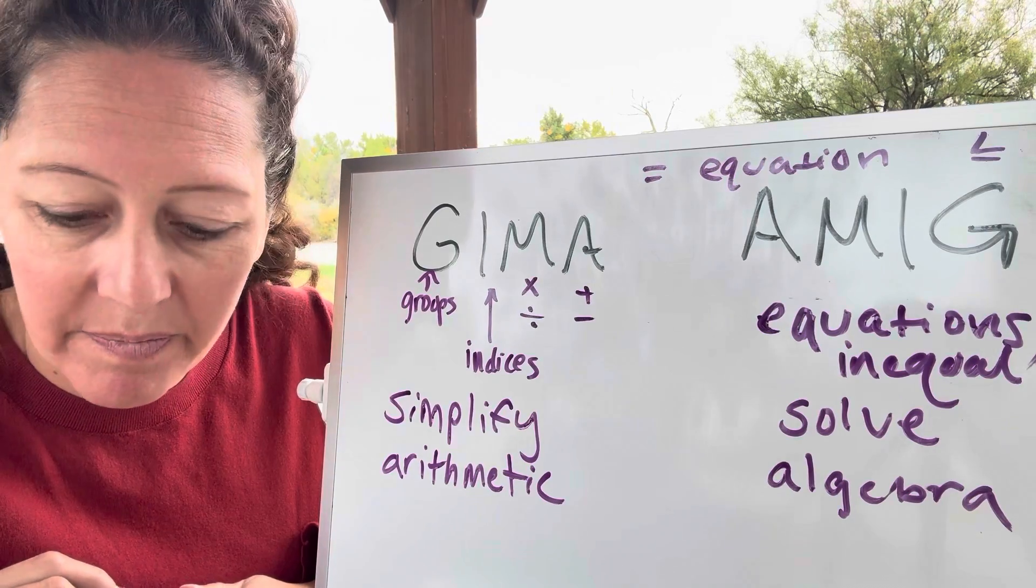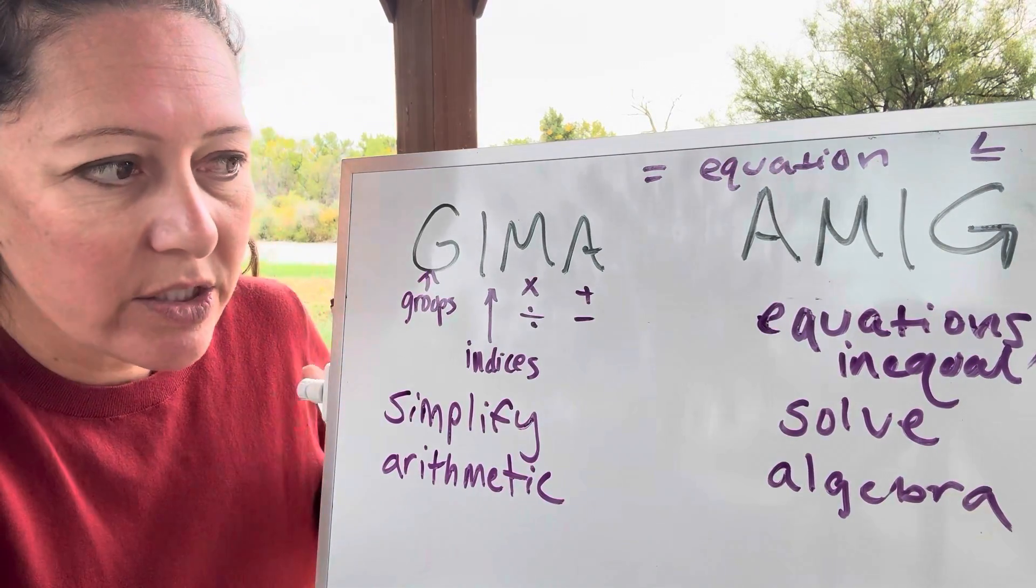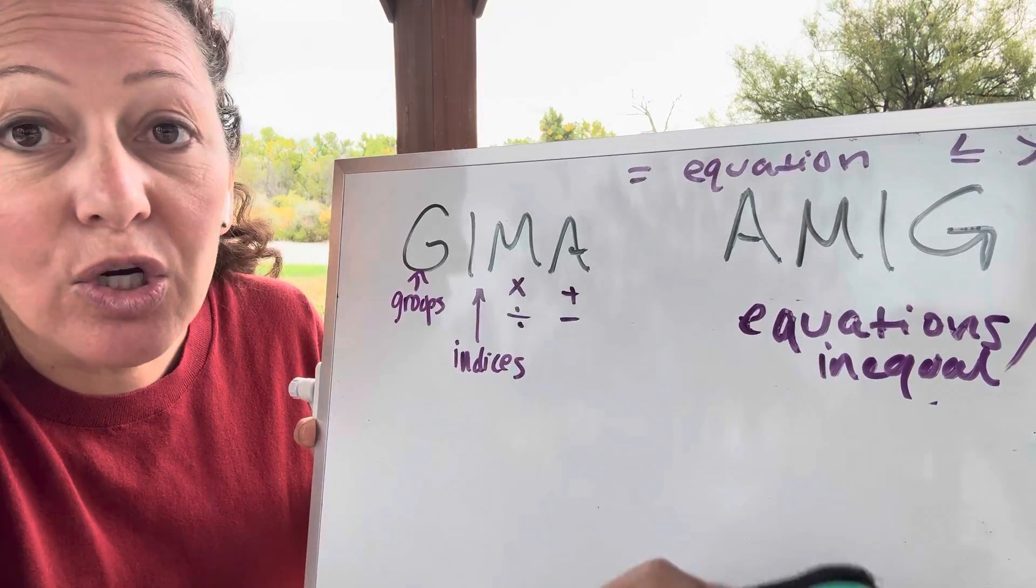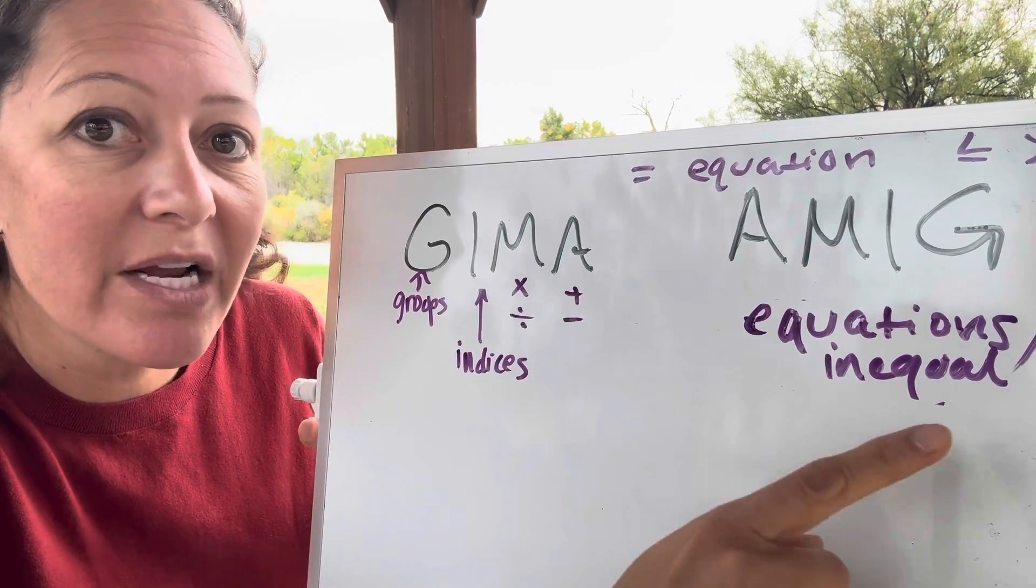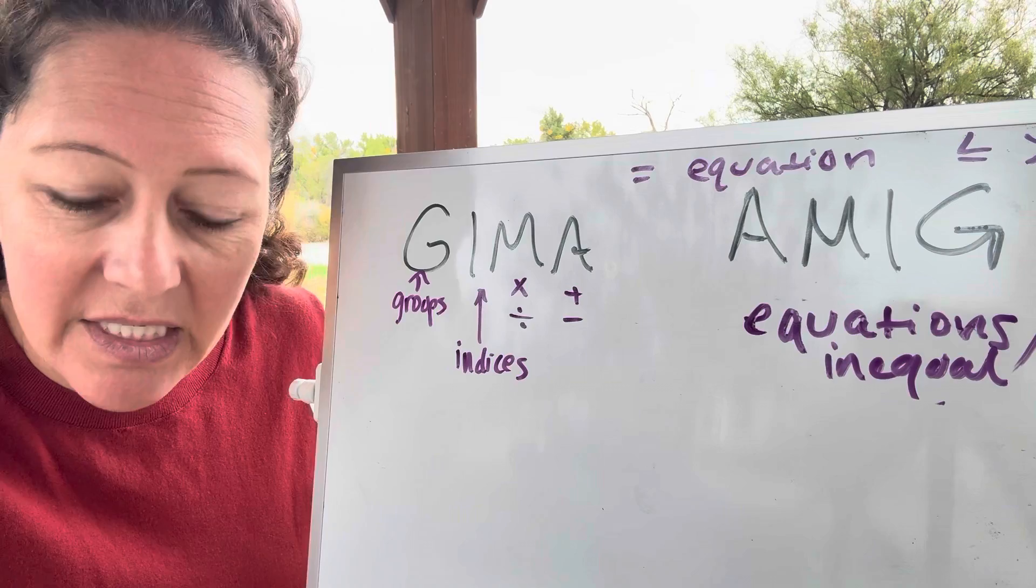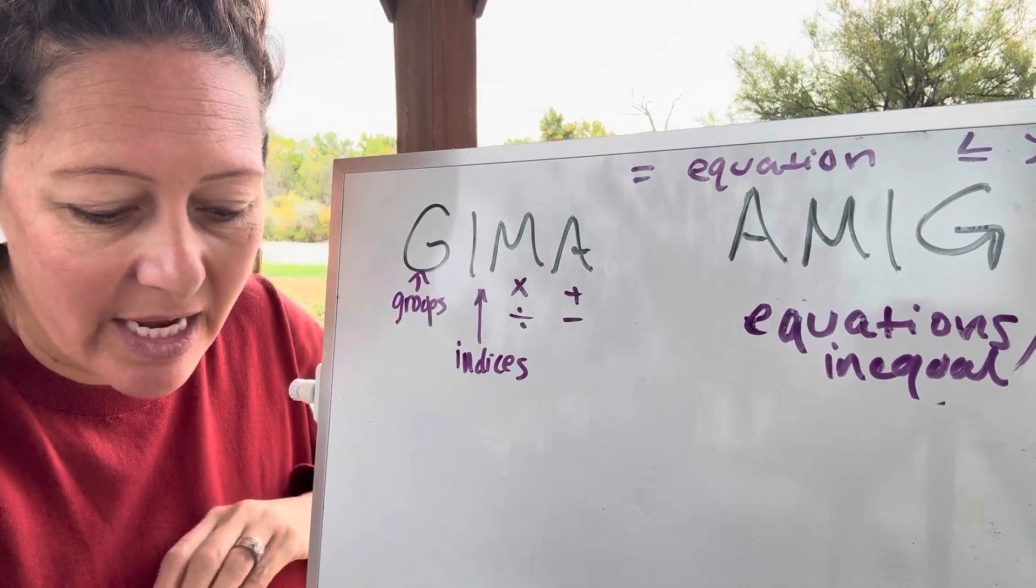The next thing is, how do the circumstance of the expression tell us what to work through? So, the circumstance would be those things. Like, are we just simplifying or are we solving for something?